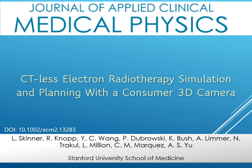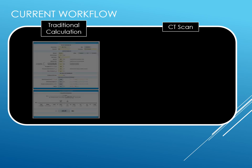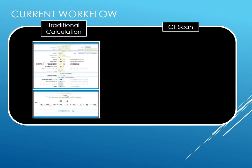Electron beam dosimetry depends on both the patient's surface contour and tissue heterogeneity. Traditionally, clinical electron treatments are often calculated without any volumetric imaging through the use of tables or spreadsheets that assume a flat patient surface and a homogeneous, water equivalent tissue.